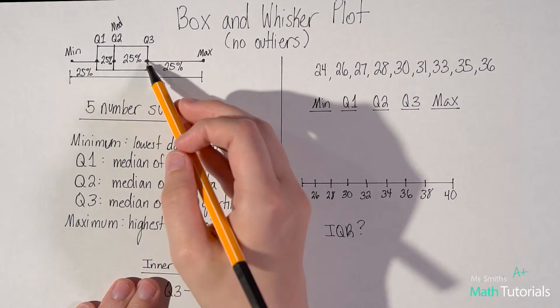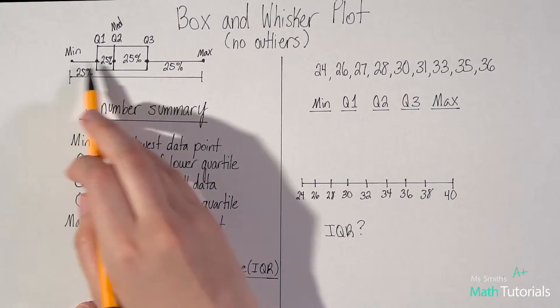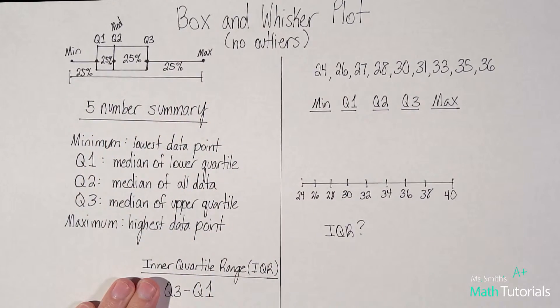You also have your Q3 and your maximum. So that's five points that make up your box and whisker plot.